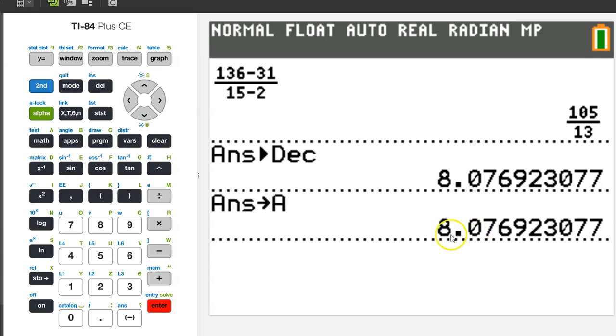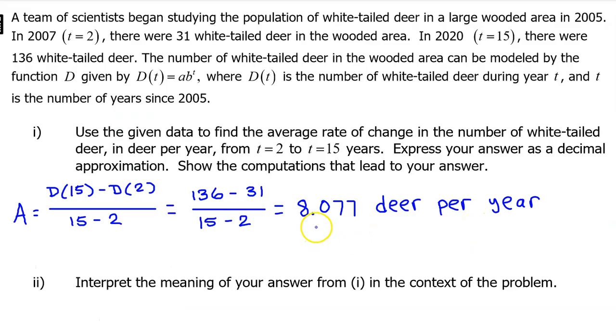For now, let's record this 8.076 if you like to truncate or 8.077 if you like to round. The average rate of change is 8.077 deer per year. Don't forget the units.